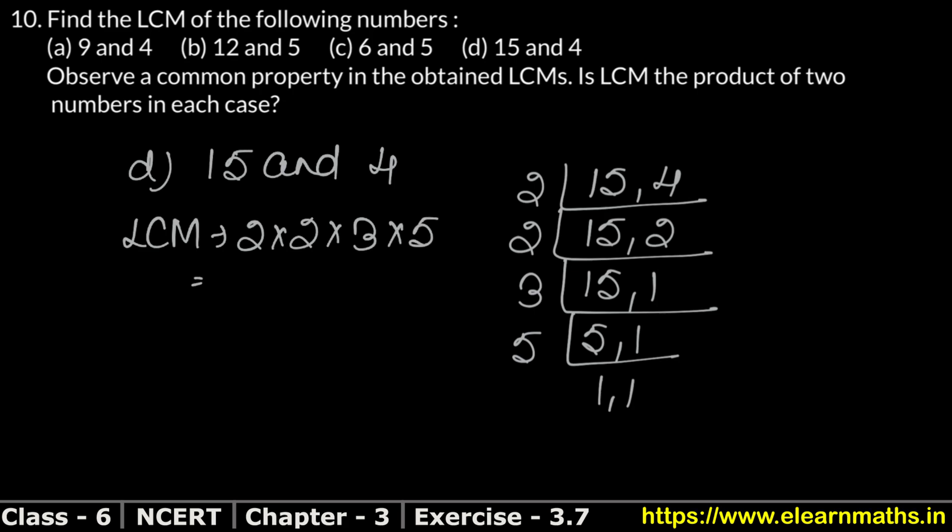1 time 3 and 1 time 5. So this became 2, 2 is 4. 4, 3 is 12. 12, 5 is 60. So if you see, this is also the multiple of both these. So we can write that for this case, is LCM the product of two numbers in each case? Yes.